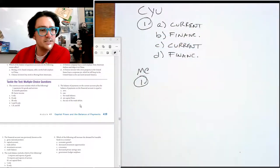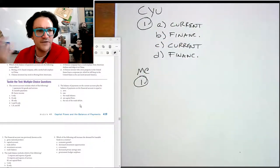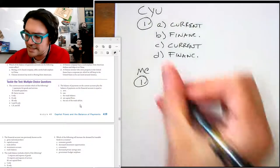Number one says, the current account includes which of the following? So we know transfer payments are counted, factor income's counted, payments, all of those are counted. So E.